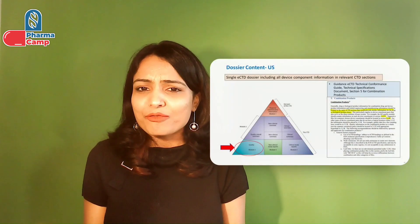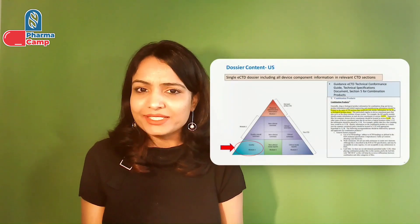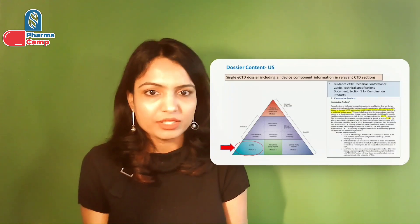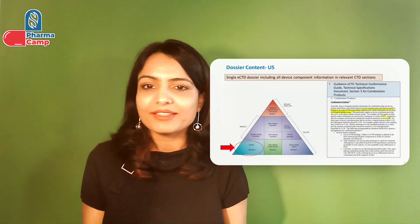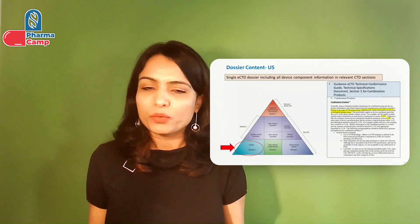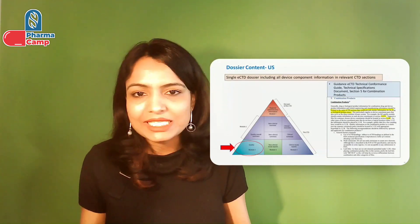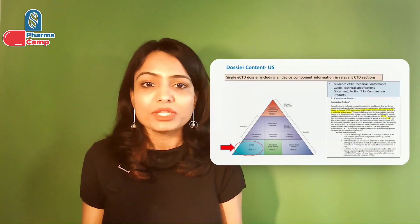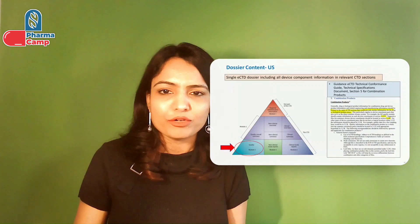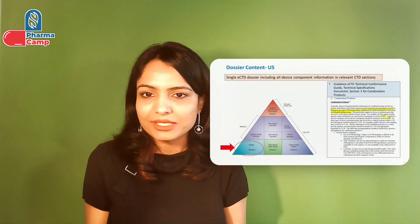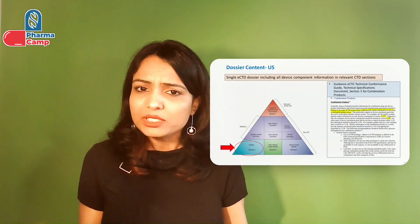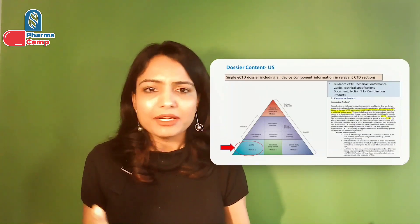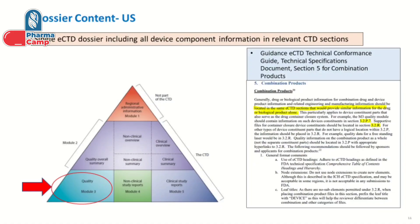In the US, because we have only one lead center involved in the review process for combination products, the FDA requires a combination product to have a single marketing application that includes all the relevant information — such as information on drug, device, or biological products, pre-clinical and clinical data, and CMC data.